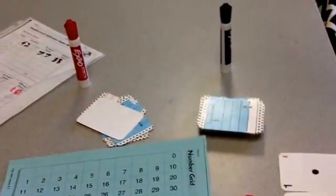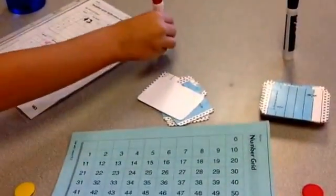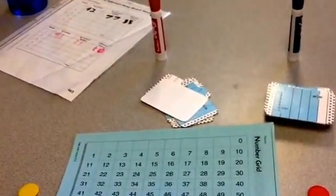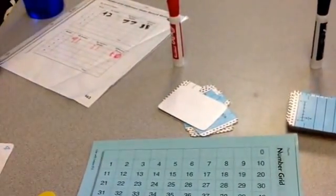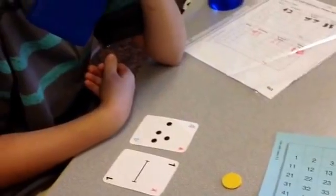You need a dry erase marker as well and a number grid difference game record sheet. You can see I have the record sheet over there. You might also want to use a calculator to add up the numbers at the very end.